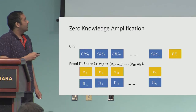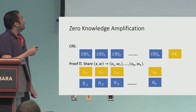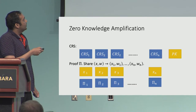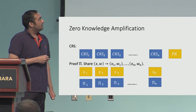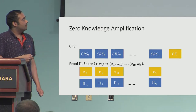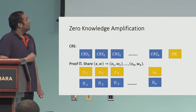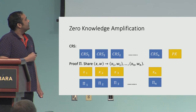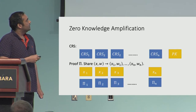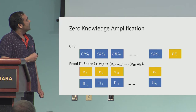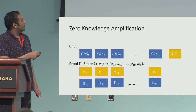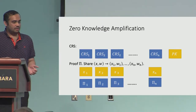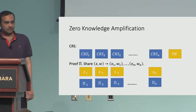Once you have the sharing, the zero knowledge amplification construction is simple. Have N independent copies of CRSs as part of the CRS, with a public key as the setup for generating commitments. To generate a proof, secret share your (X, W) witness to generate shares, and then for each Xi use CRSi to generate proof i. That's the output of the zero knowledge amplification compiled argument.